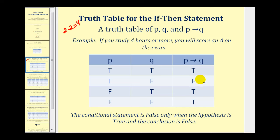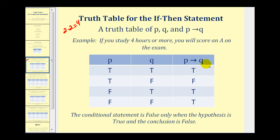Notice there is only one false in this column, and that's important to recognize. The conditional statement if P then Q is only false when the hypothesis is true and the conclusion is false. Everything else is true. If we can remember that, it makes these tables a lot easier to complete.